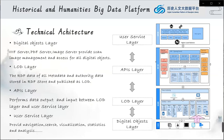This is the technical architecture of the platform. There are four independent layers. The digital objects layer has a triplestore server, PDF server, and image server which provides scanned images — providing digital object management and access for all digital objects. The linked open data layer stores RDF data of all metadata and authority data in an RDF store, published as linked open data. The APIs layer performs data output and input between the linked open data layer and the user service layer. The user service layer provides navigation, search, visualization, statistics, and analysis for users.